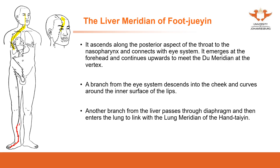The meridian goes up to meet the Du meridian at the top of the head. A branch from the eye system descends into the cheek and curves around the inner surface of the lip. Another branch from the liver passes through the diaphragm and enters the lung, linking with the lung meridian of Hand Tai Yin.